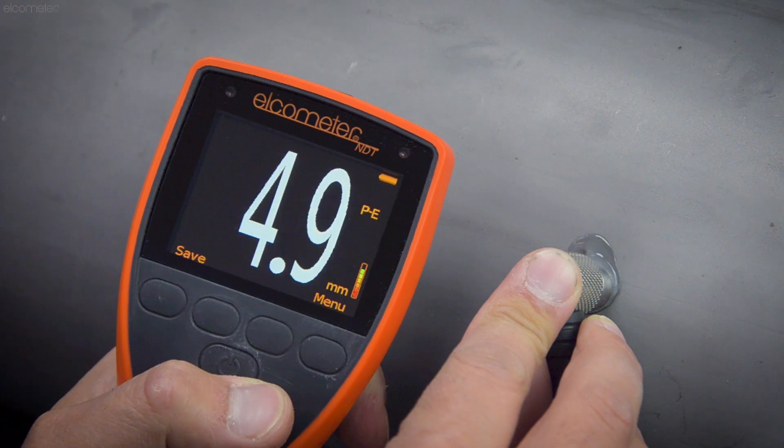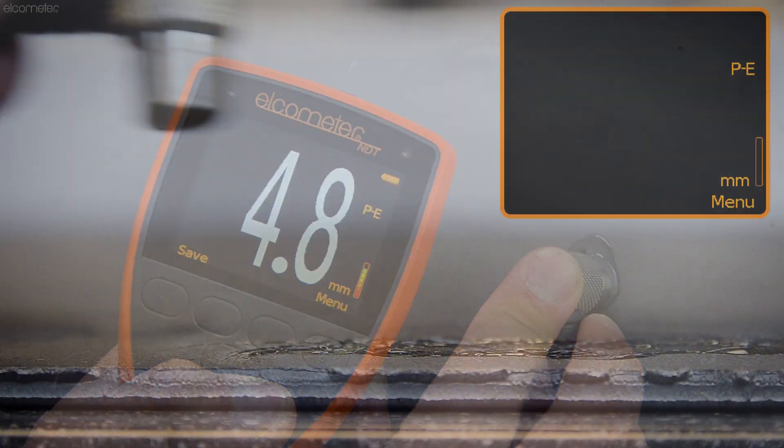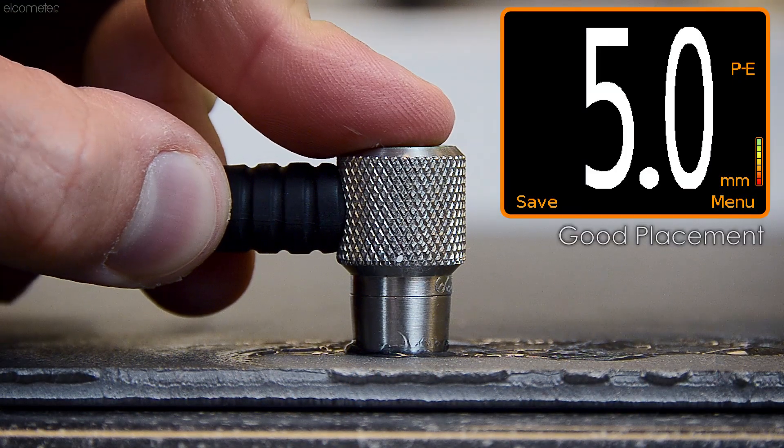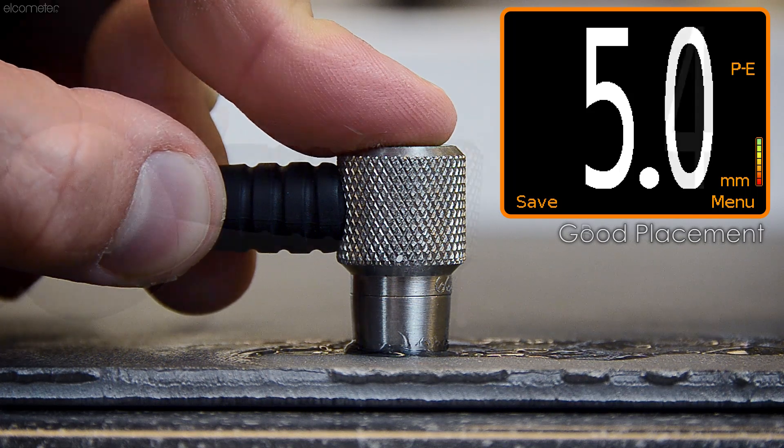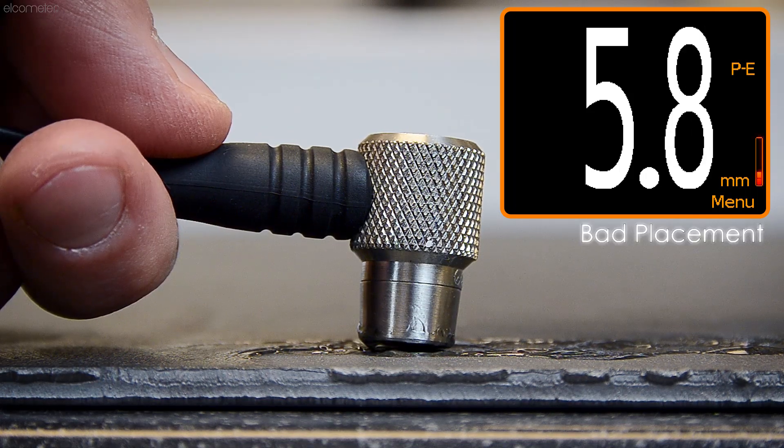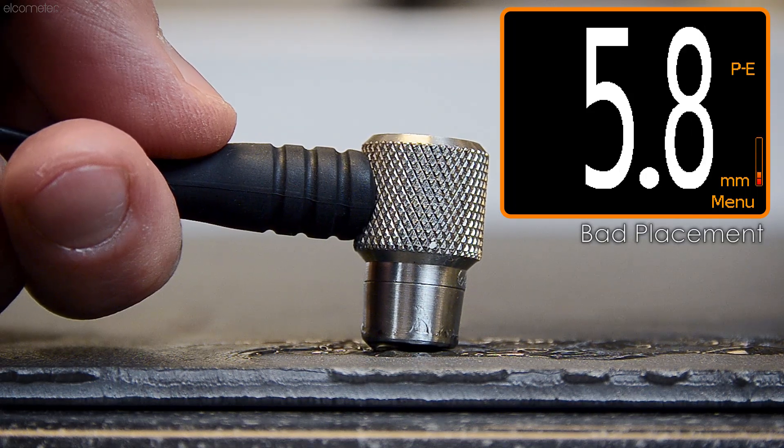When the transducer is placed correctly on the material, the reading stability indicator shows how strong the ultrasonic signal is. A full bar means a strong signal, ensuring accurate, reliable measurements.